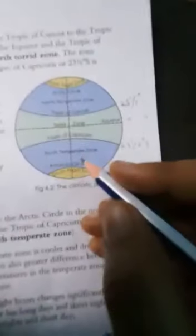We have seen effects of latitude. The Earth has been divided into three climatic zones. The torrid zone extends from Tropic of Cancer, with the help of a diagram here.